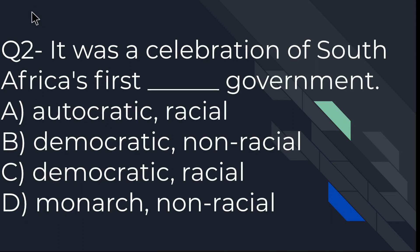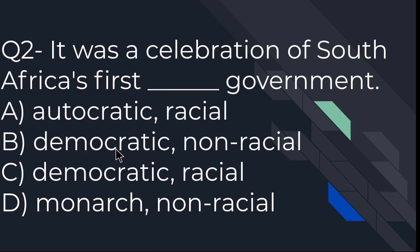The second question is: it was a celebration of South Africa's first ___ government. Which is the right option? The options are: autocratic, racial; democratic, non-racial; democratic, racial; or monarch, non-racial. If you have read the chapter thoroughly, you know that B is the right option — democratic, non-racial government.